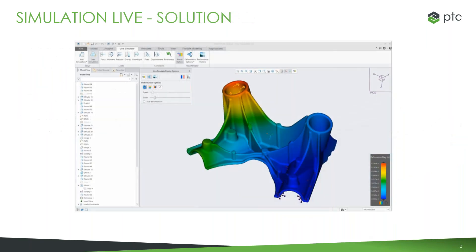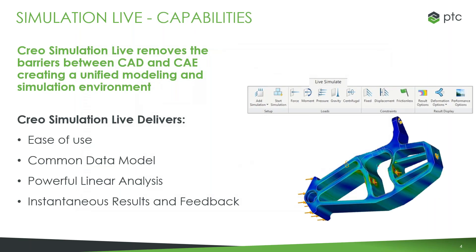We wanted to tackle those challenges with Creo Simulation Live. This brings real-time simulation capabilities directly into our CAD environment, integrating ANSYS technology into Creo Parametric to give engineers the power to rapidly explore and instantly understand the impact of every single design change they make. It's a truly unified model and simulation environment — you see the simulation on top of the actual model, completely integrated into the design environment, with the goal of providing instantaneous results and feedback.